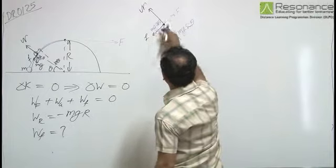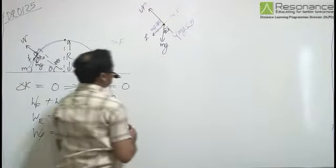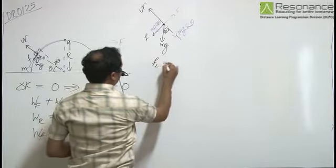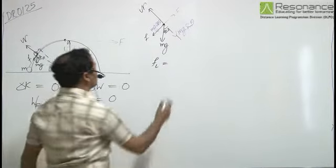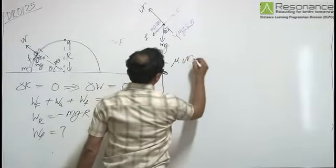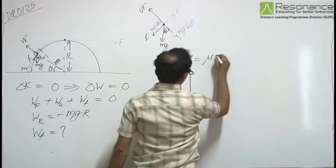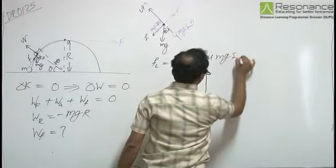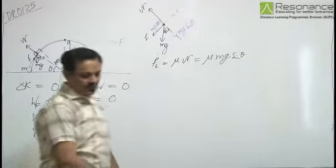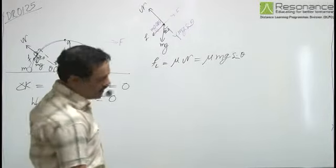And frictional force is acting in this particular direction. So the value of limiting friction is mu N and that is equal to mu Mg sin theta. This is the limiting friction.